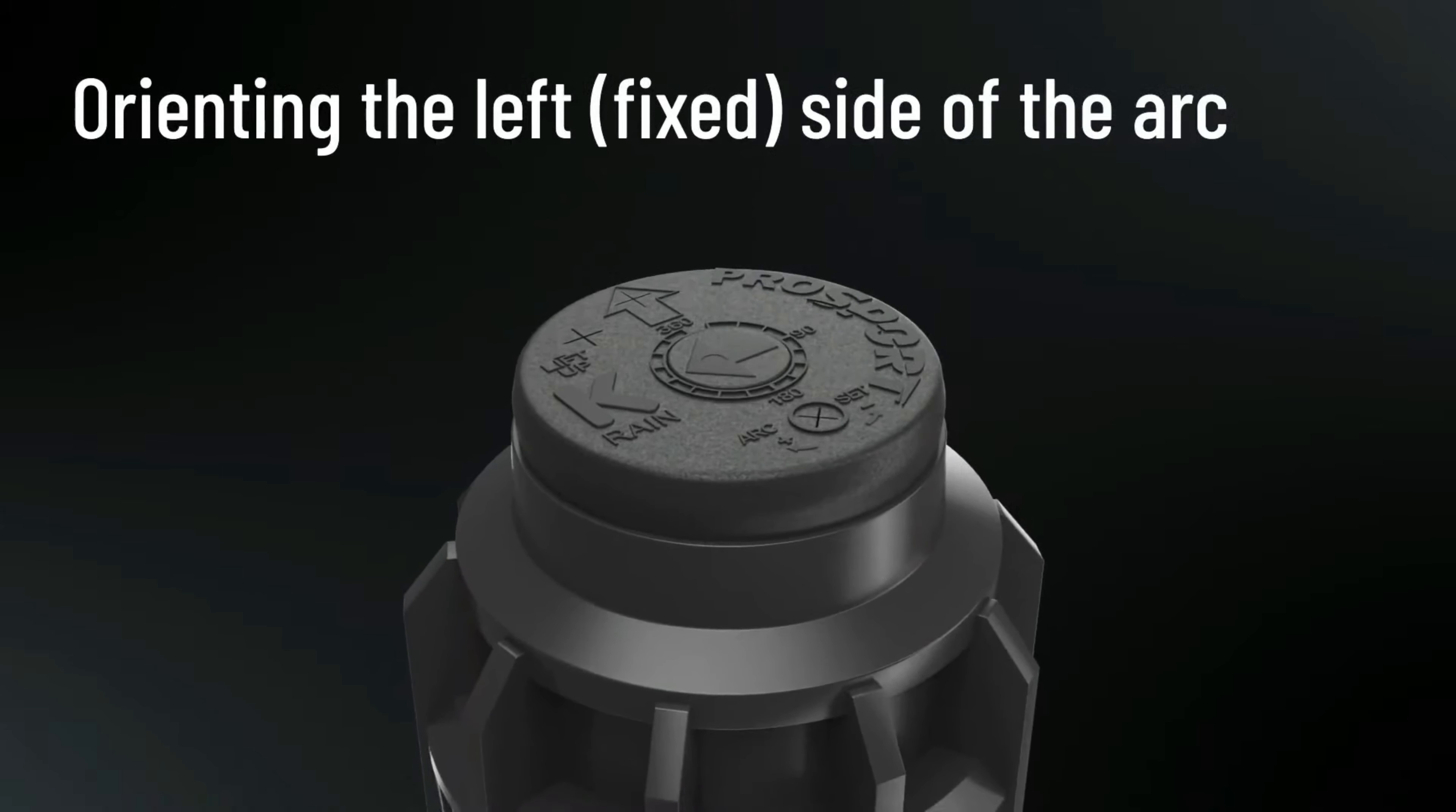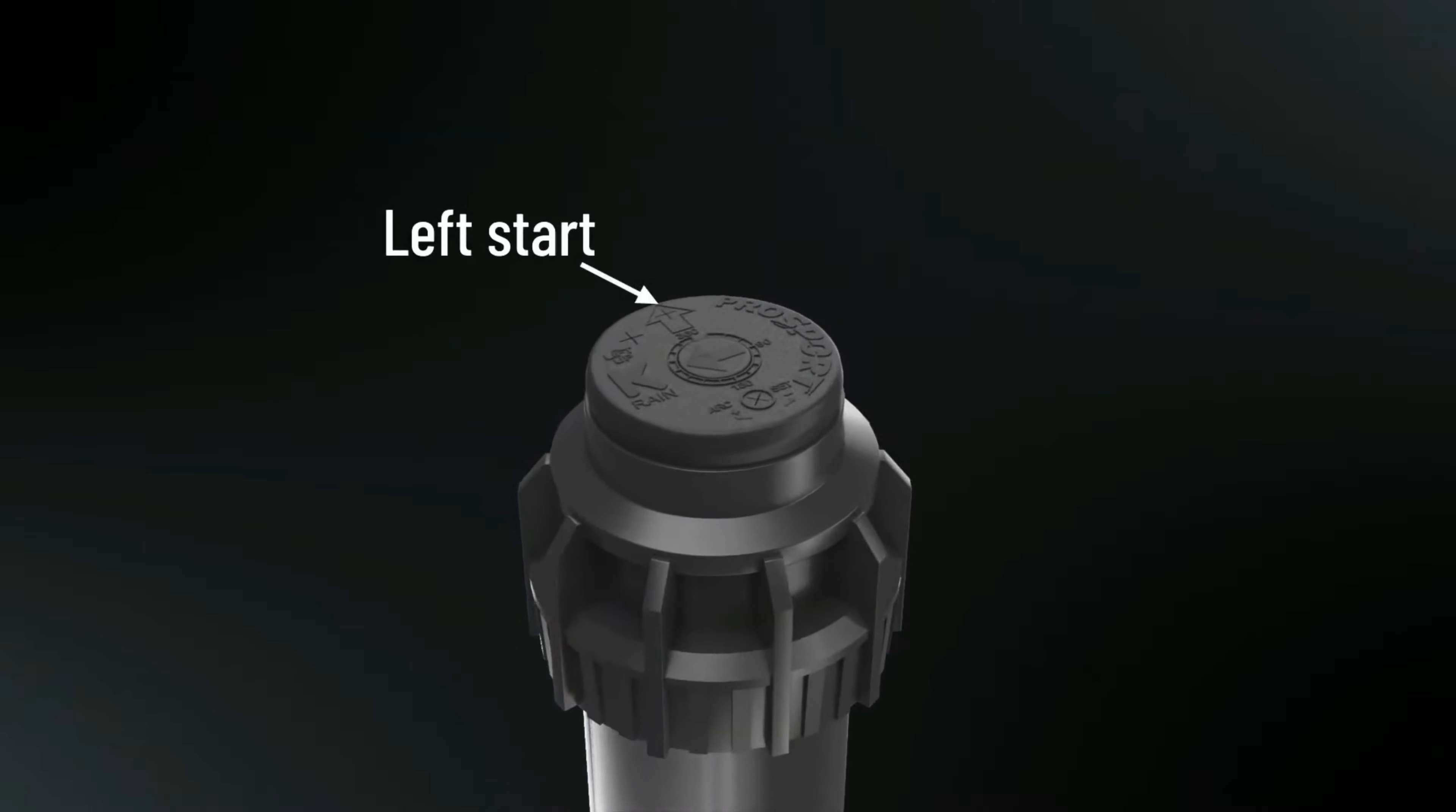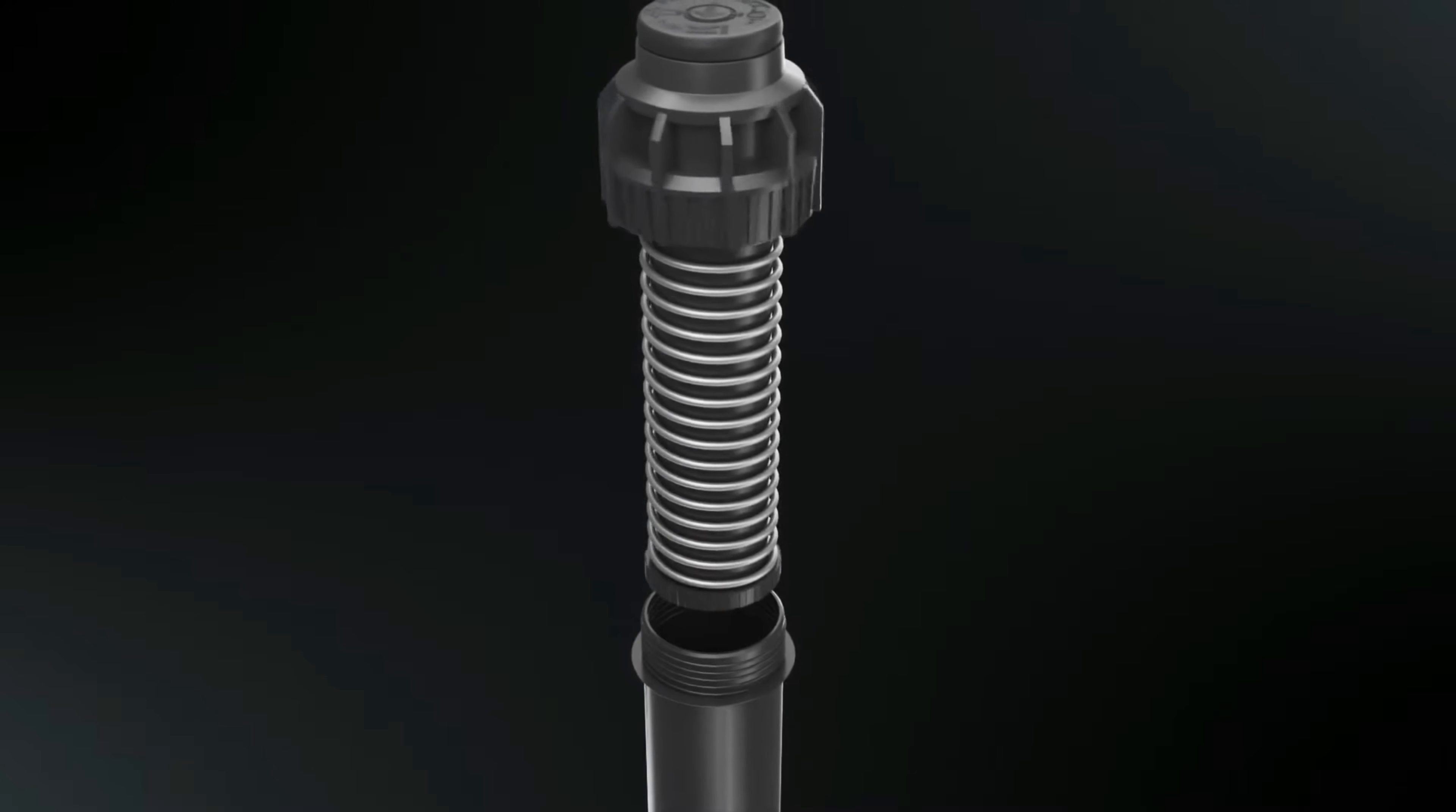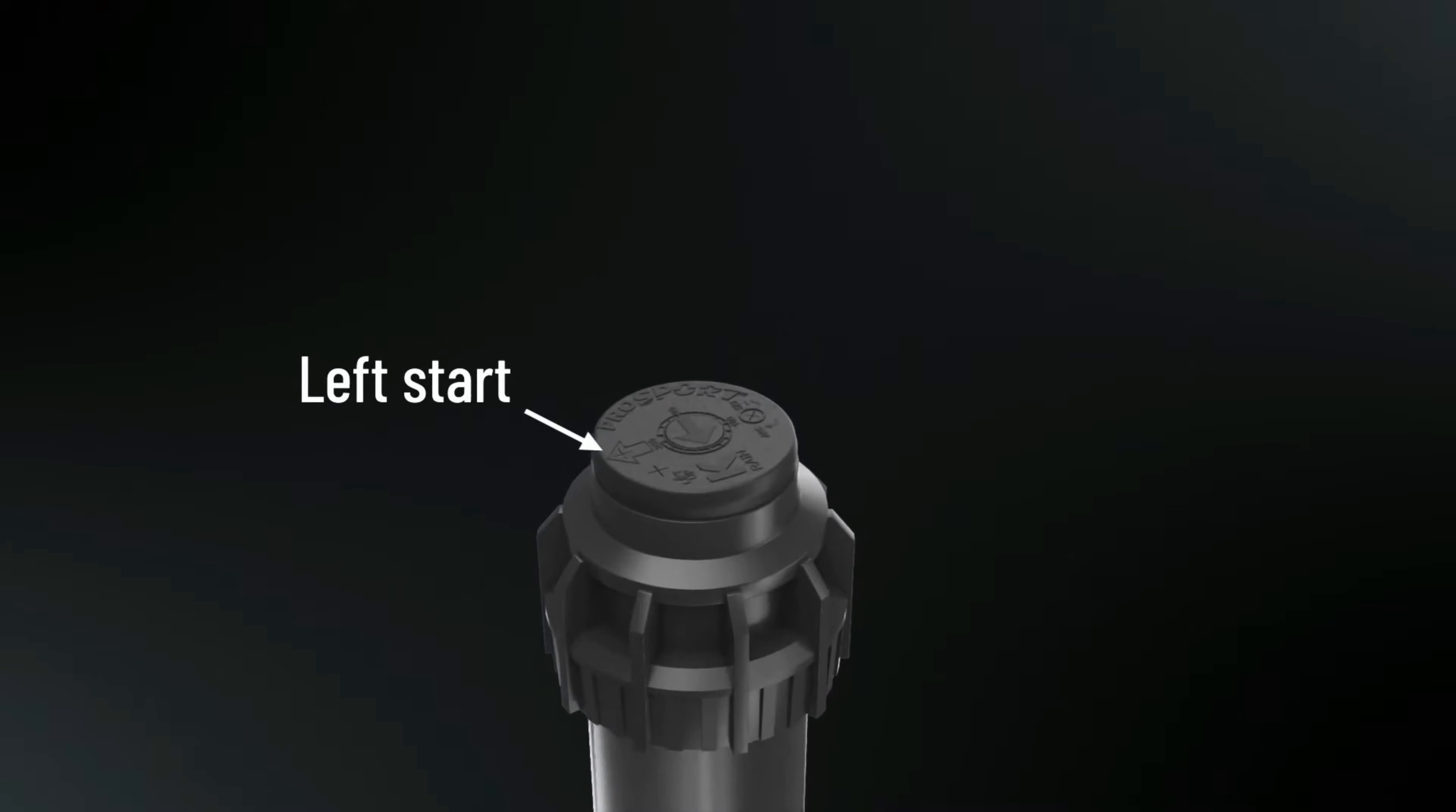Hold the lower riser assembly with one hand and turn the can clockwise or counterclockwise on the fitting until the nozzle arrow is pointing where you want the sprinkler to begin spraying. Or alternatively, unscrew and remove the entire assembly, align to your desired start point, and screw in the assembly again.